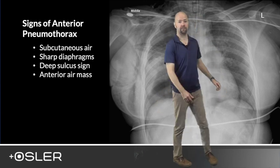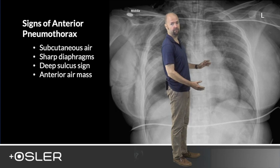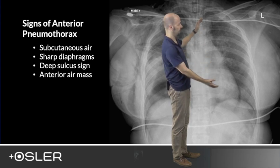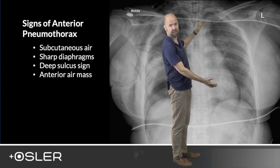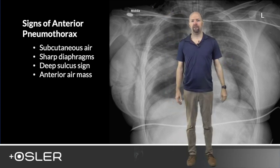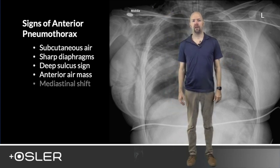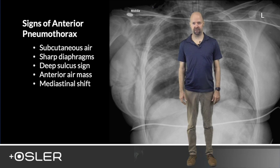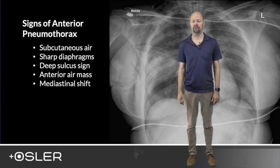Fourthly, stand back from the film for a moment. You'll often get the sense of a large air mass sitting in front of the lung and the upper abdominal organs. Finally, look for the tell-tale signs of mediastinal shift, which might indicate a pneumothorax under tension.